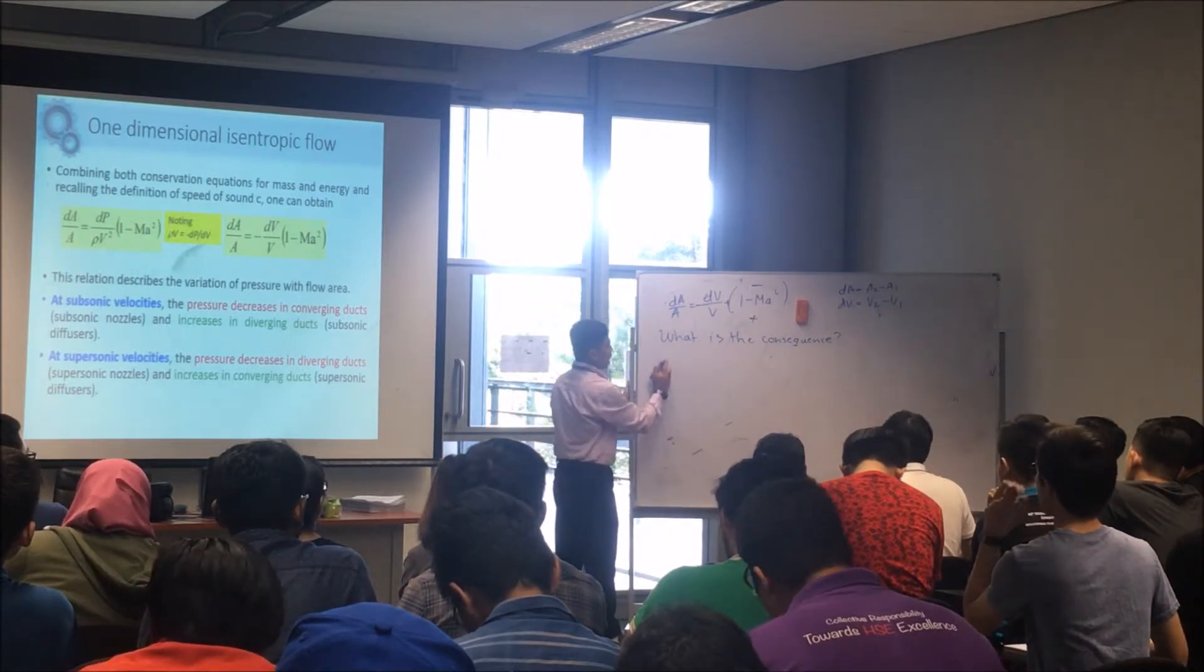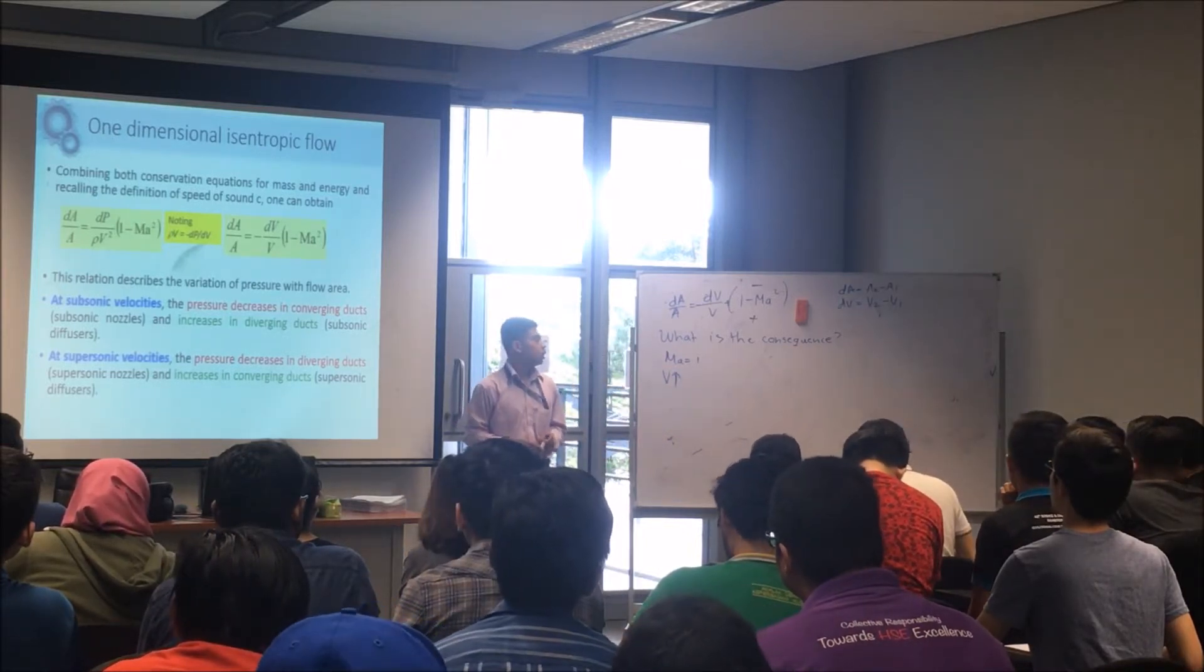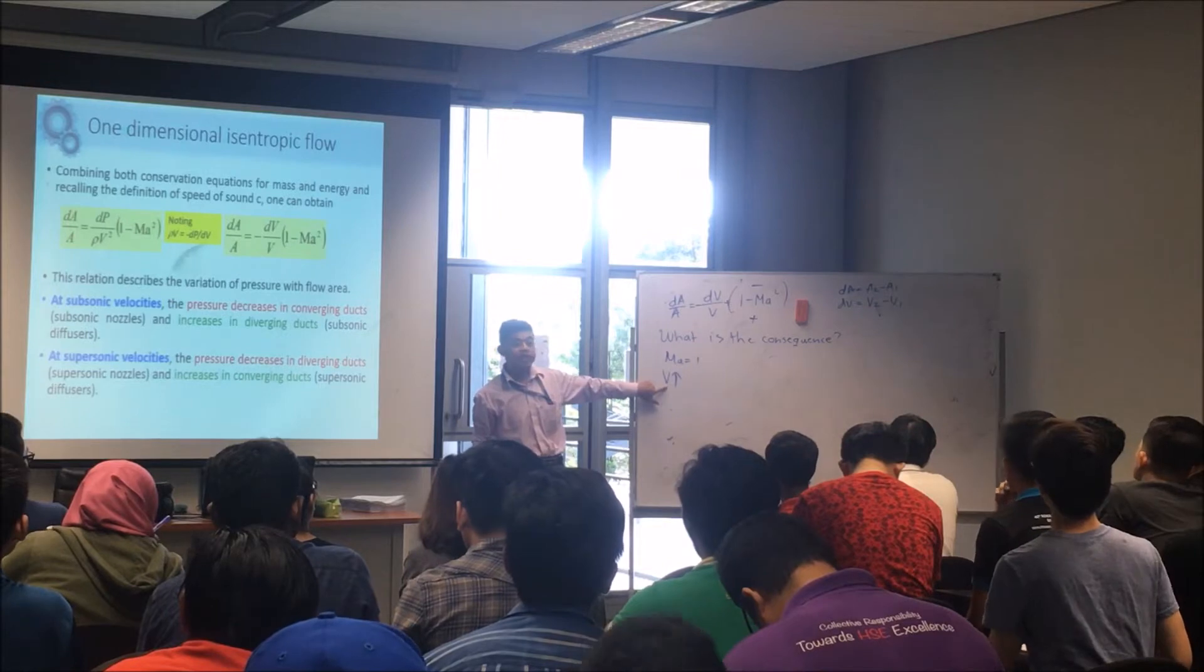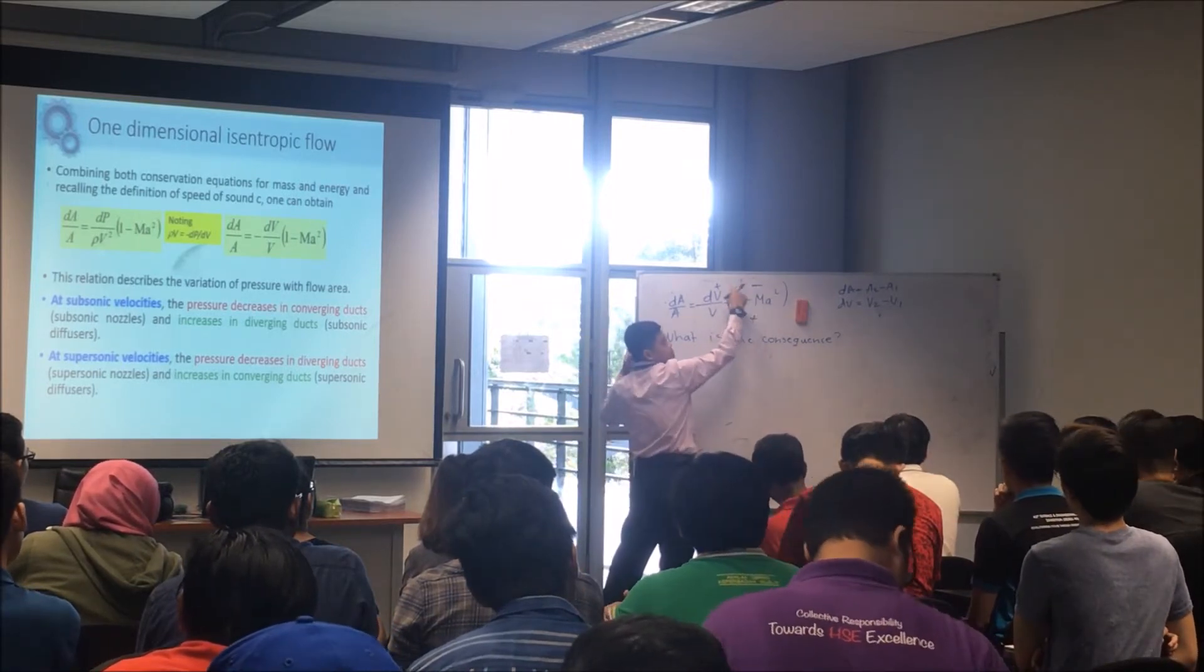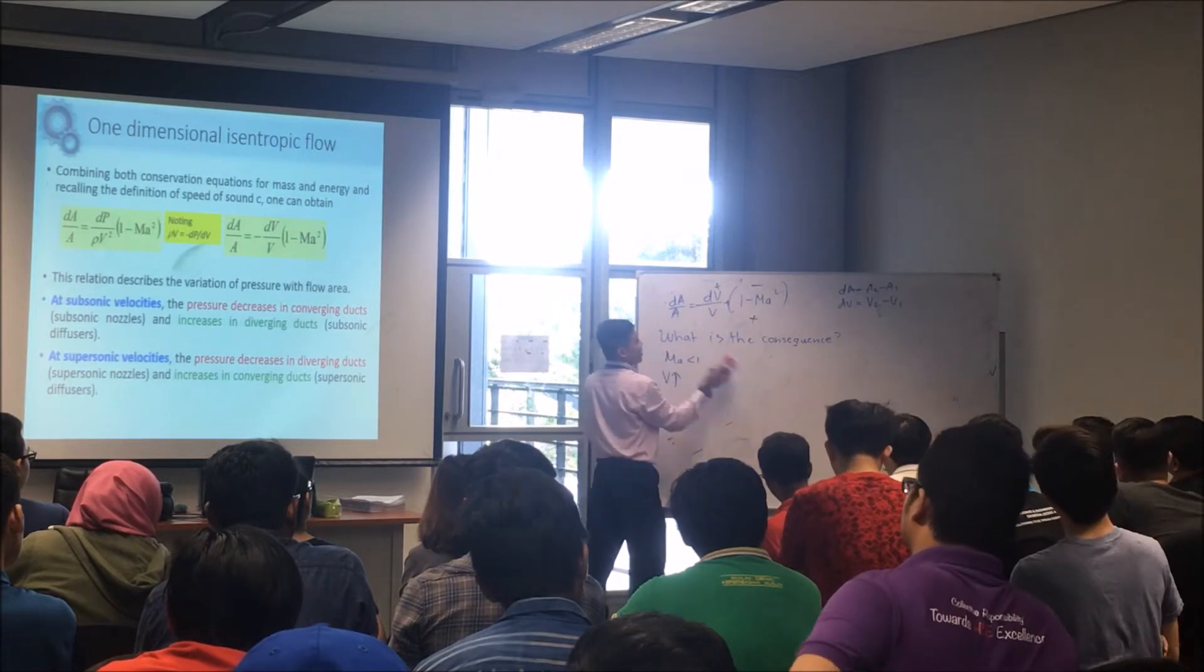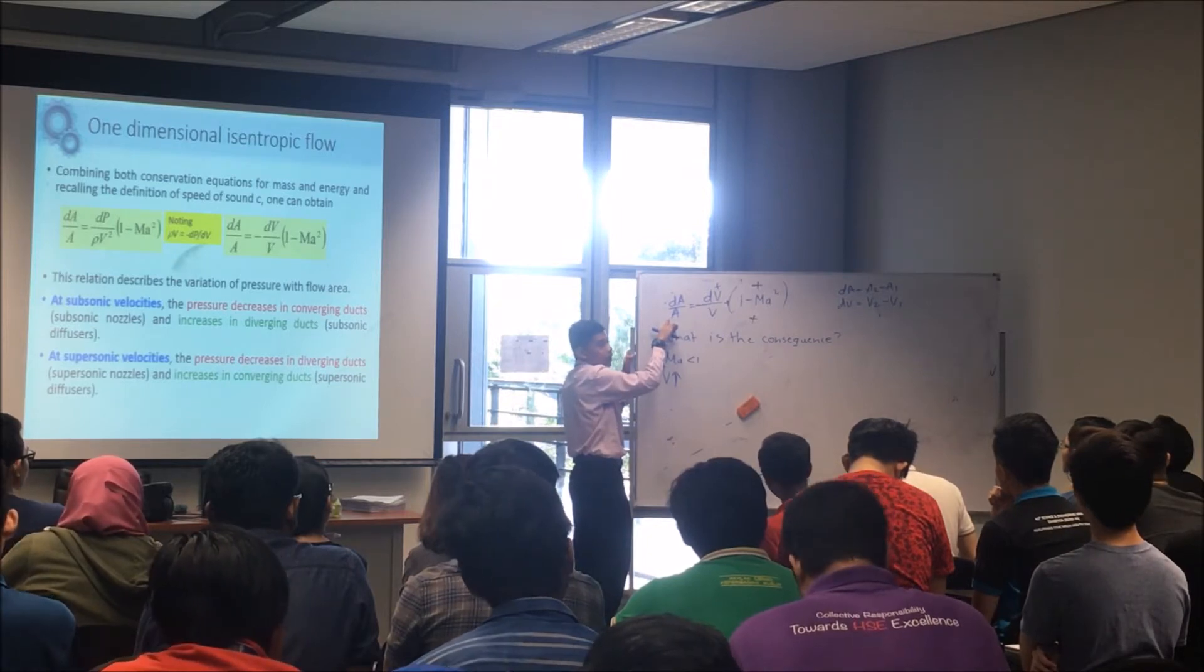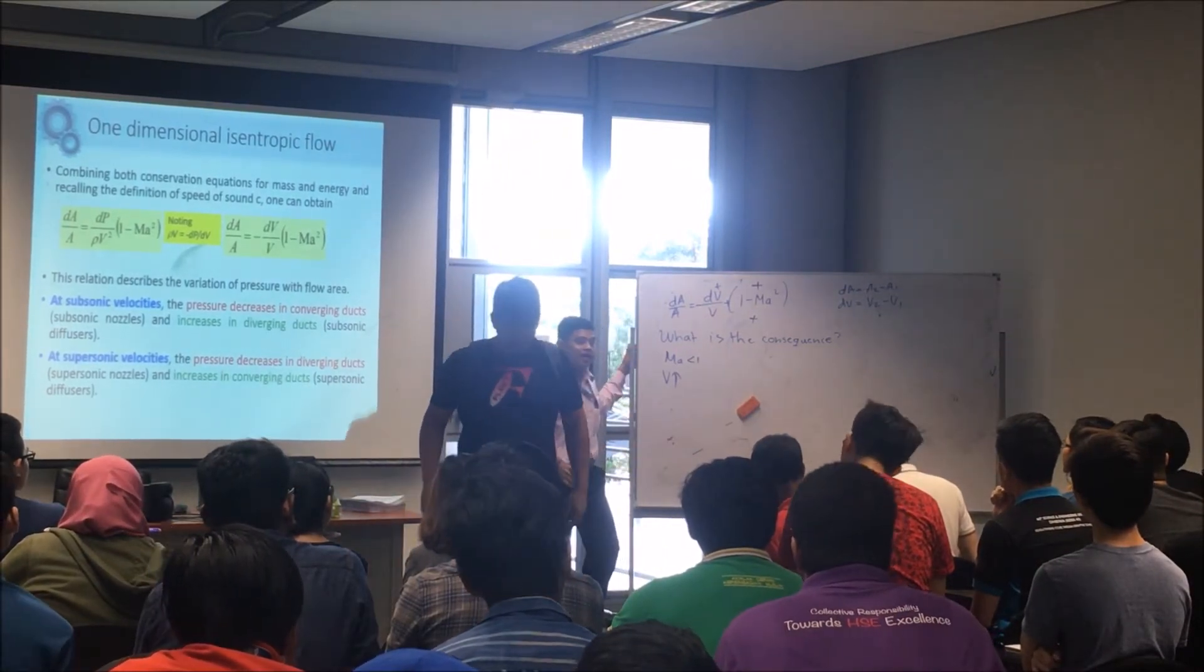So if you look at this one when Mach number is less than 1, if you want to increase the velocity what should you do? So you want velocity increase - if velocity increases dV is positive. When velocity increases dV is positive, this one has to be positive, and Mach number is less than 1, so this is positive. Positive times positive - dA has to be negative. dA negative means the area is smaller.